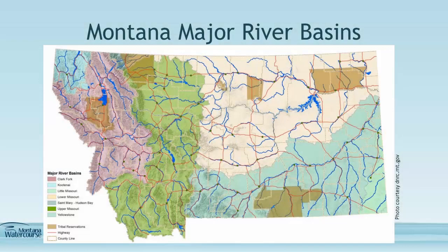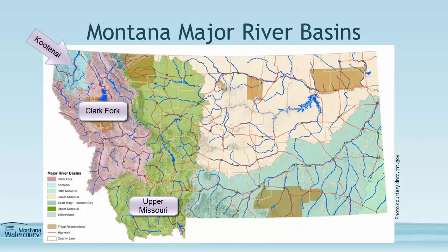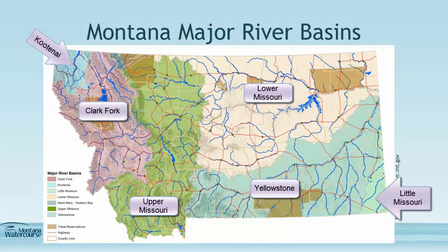Montana is divided into seven major river basins or watersheds: Kootenai, Clark Fork, Upper Missouri, Lower Missouri, Yellowstone, Little Missouri, and St. Mary.